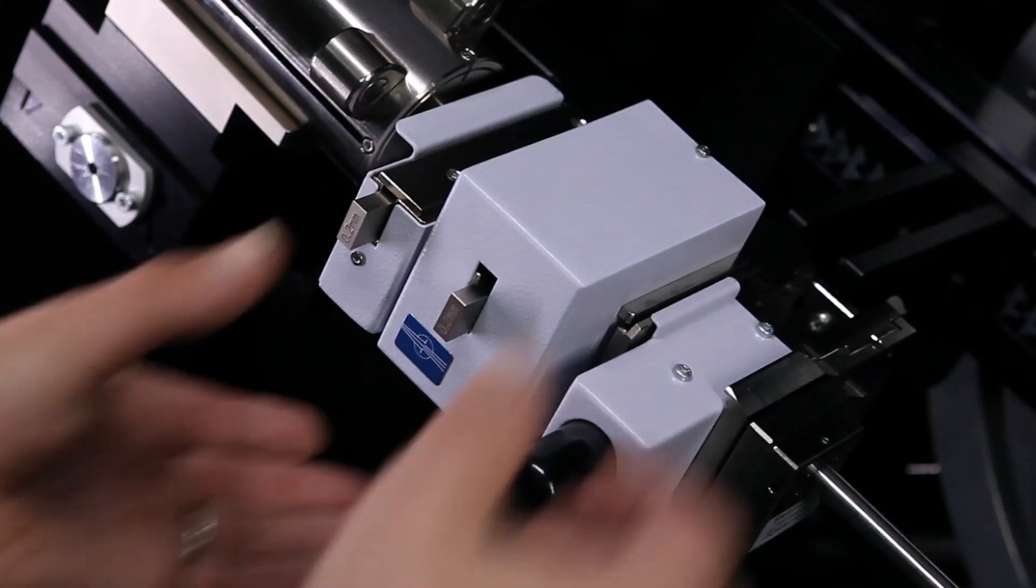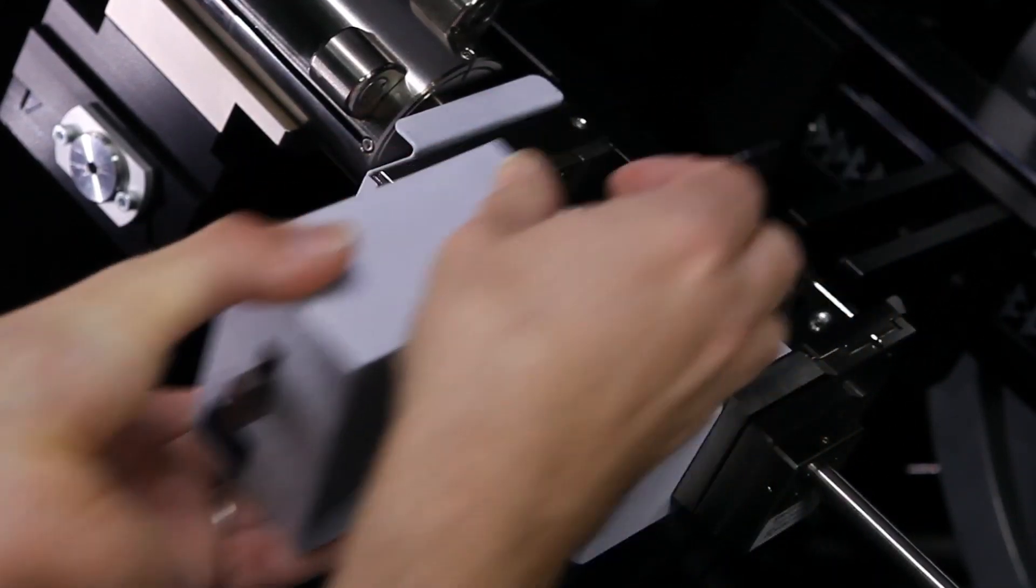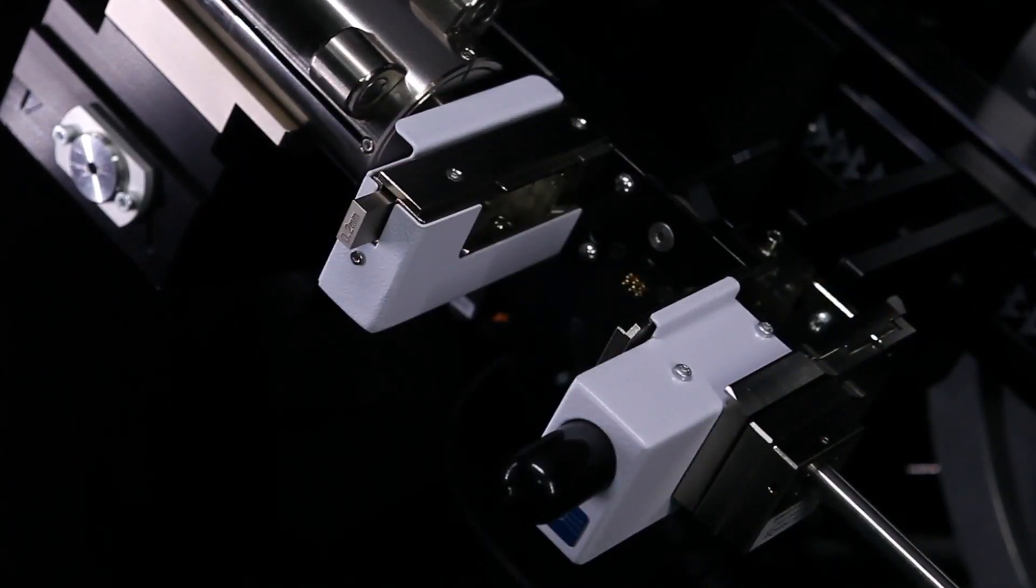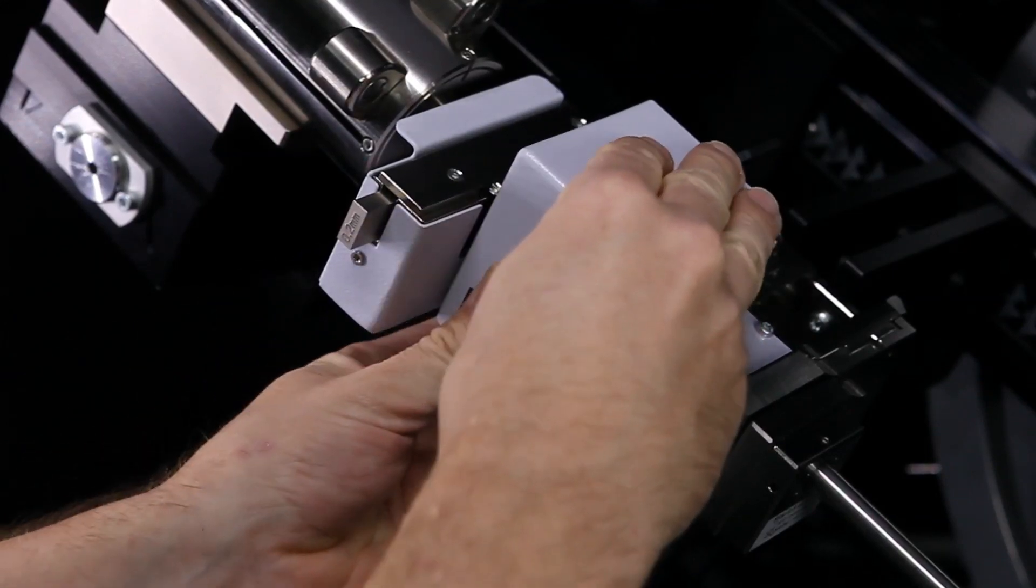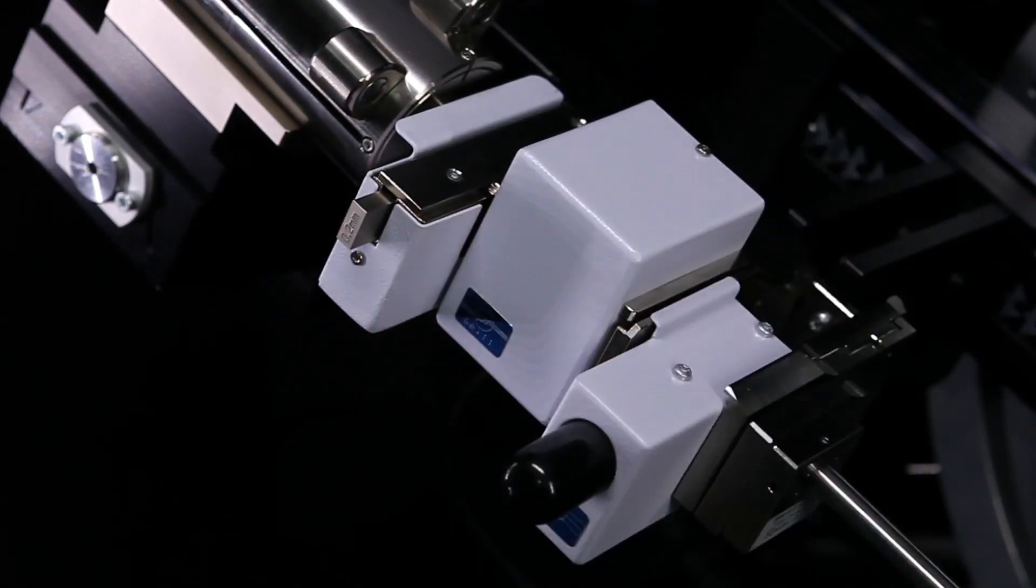If the user has a more specialized application, it's nice to know that the Twin is part of our SnapLock line of modules. And they can be removed and replaced in a matter of seconds without requiring any alignment.